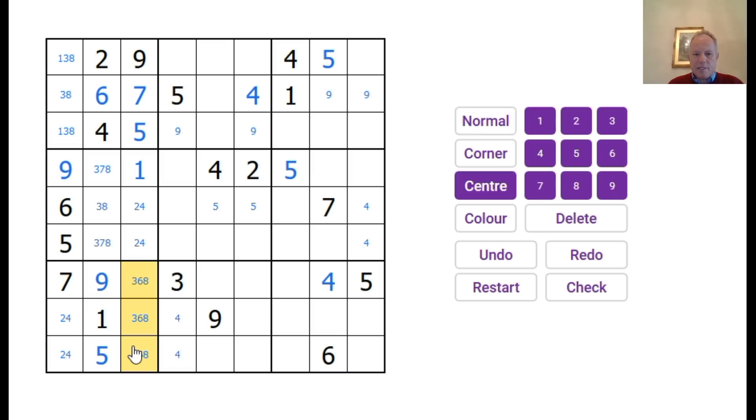Nine and five can go in. Three, eight, six locked into those three cells. Interesting how many triples we're getting locked in fairly quickly. Now let's go across. Seven, nine, three, four, five.